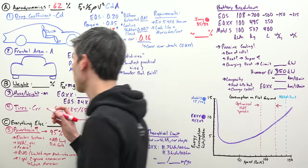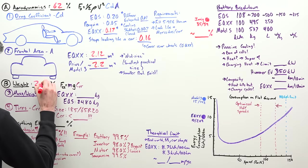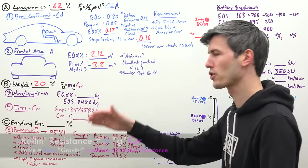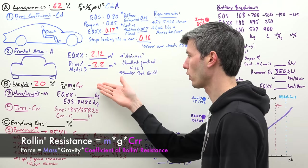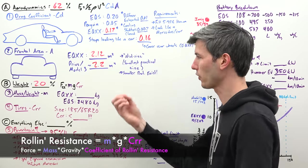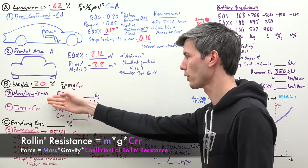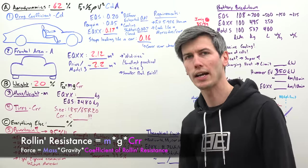Moving on to weight, Mercedes says this makes up about 20% of overall energy consumption. If we go to our equation for how much energy is being lost from weight, what variables can we control? We can control the mass of the vehicle and the tires we select.